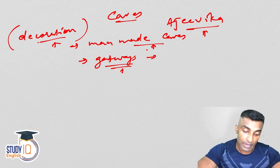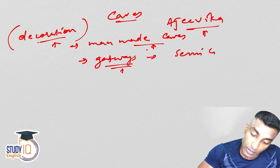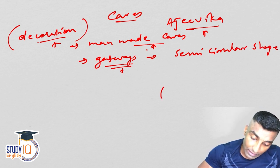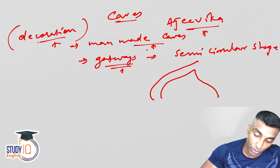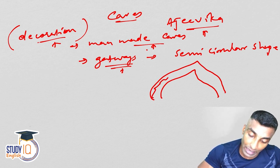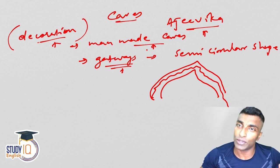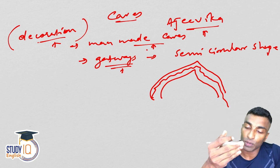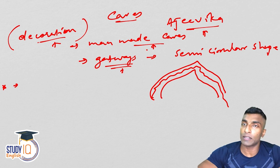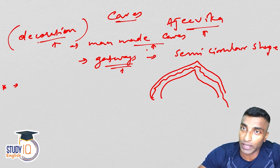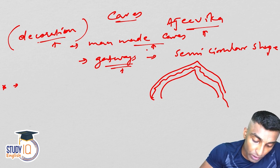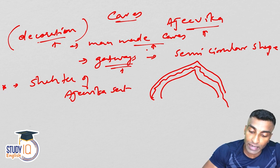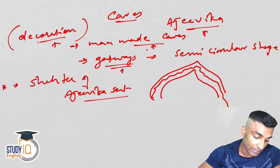These gateways are also given a semi-circular shape at the entrances. There are natural caves which were decorated, and man-made caves were also made. Ashoka patronized the caves and he initially made caves for the shelter of the Ajivika sect, although he patronized all three.